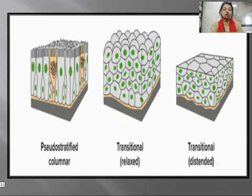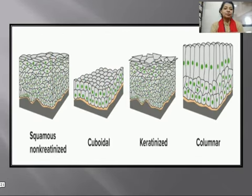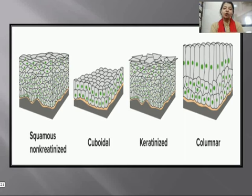The next two images show transitional tissue — one being relaxed transitional tissue and the other being distended transitional tissue. This slide also shows squamous non-keratinized tissue, cuboidal tissue, keratinized tissue, and columnar tissue.